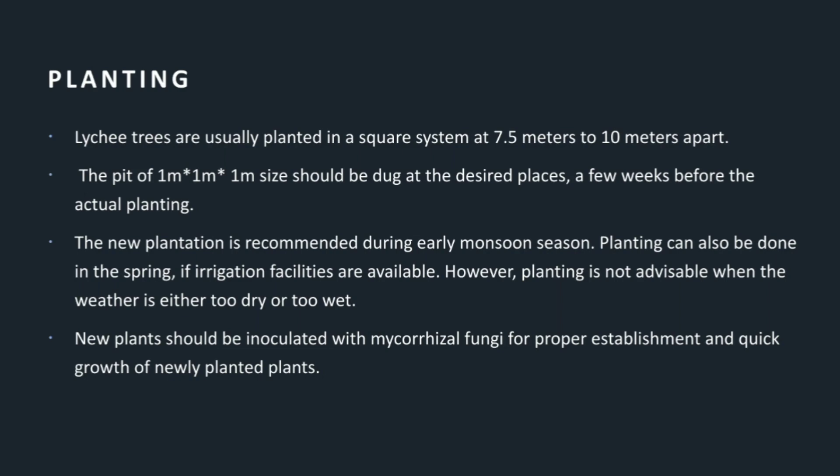Planting: Lychee trees are usually planted in a square system at 7.5 m to 10 m apart. A pit of 1 m x 1 m x 1 m size should be dug at the desired places a few weeks before actual planting. New plantation is recommended during early monsoon season. Planting can also be done in spring if irrigation facilities are available. However, planting is not advisable when the weather is either too hot or too wet. New plants should be inoculated with mycorrhizal fungi for proper establishment and quick growth.